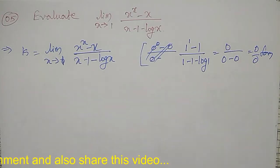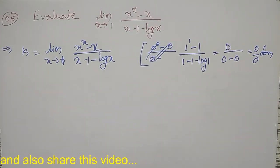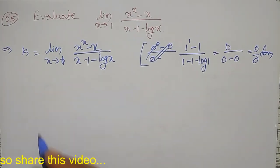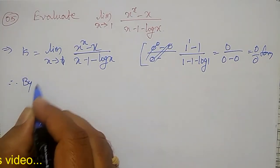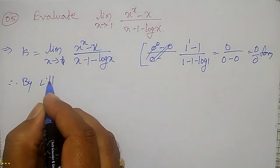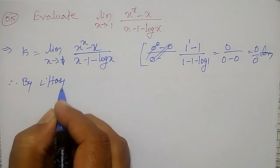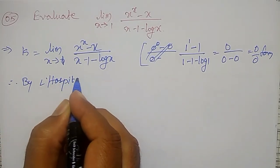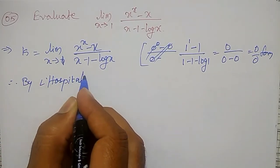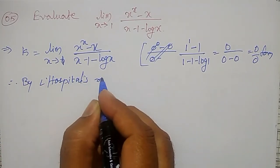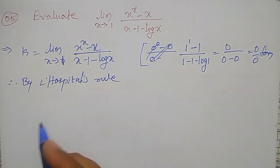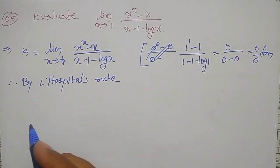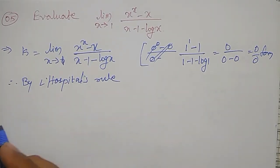It is a 0 by 0 form. Then we can apply the L'Hôpital rule. Therefore, by L'Hôpital's rule, differentiate numerator separately and denominator separately.